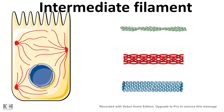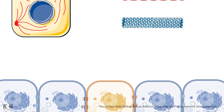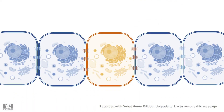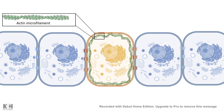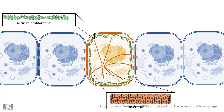In this video we'll be talking about intermediate filaments and have a bird's-eye view on their assembly and structure. If we talk about the cytoskeletal elements of a cell, we would find actin-based microfilaments, microtubules, and we have a third type which is intermediate filaments.